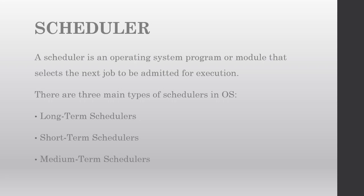When we select a job in the operating system for execution, we use the scheduler. There are three main types of schedulers: long term schedulers, short term schedulers, and medium term schedulers. Let us understand them one by one.